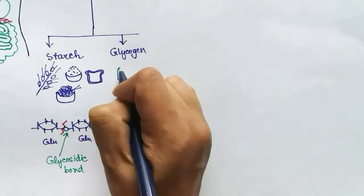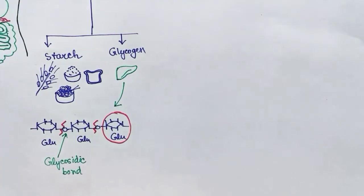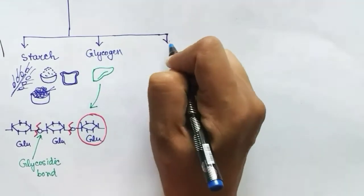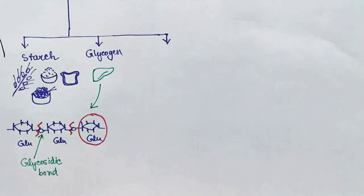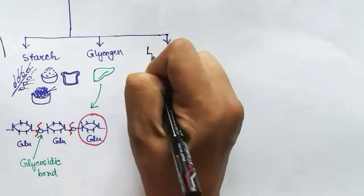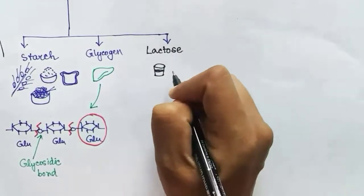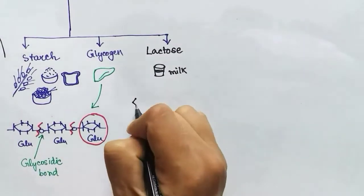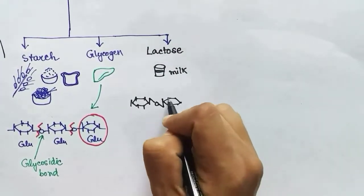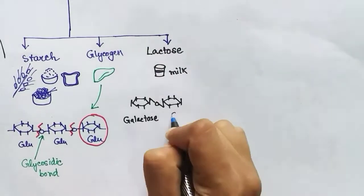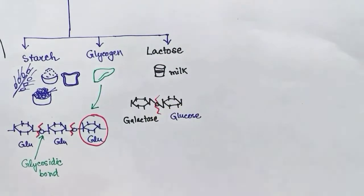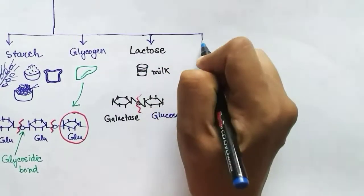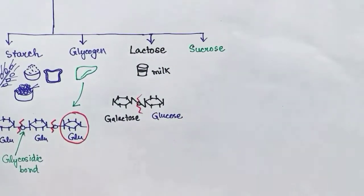Starch is a storing material of plants — they store glucose in the form of starch. Just like that, the animal body also stores glucose in the form of glycogen. So if you are eating some animal organs like animal liver, you are eating glycogen, and the molecular structure of glycogen is similar to starch — it is also a polymer of glucose. Now if you are drinking milk, you are consuming another type of carbohydrate: lactose. The molecular structure of lactose is quite different — it has one galactose molecule and one glucose molecule bonded to each other by a glycosidic bond, so we have to break that bond to get free glucose and galactose.